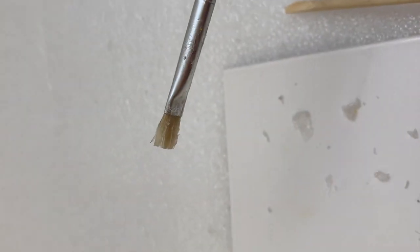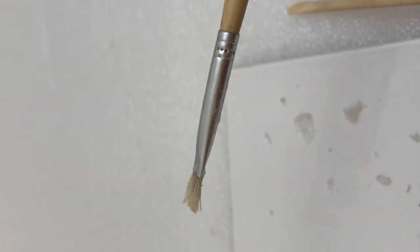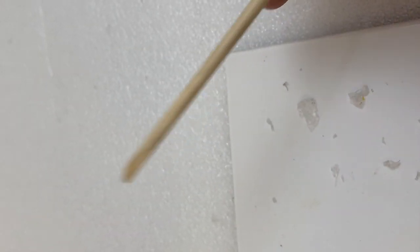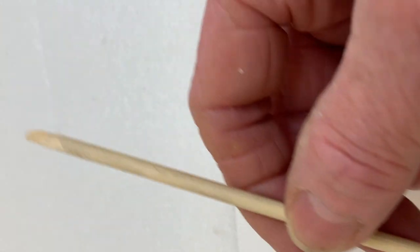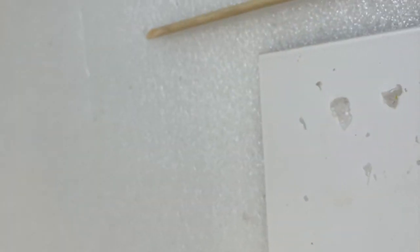In the end, you will end up with a bald paintbrush. But what I do with mine, because these are wooden stems, I sharpen one end to a point and the other end to a wedge, and I use them to pick out the glue between the tessera. I just keep sharpening this until there's nothing left. That way you're not wasting anything.